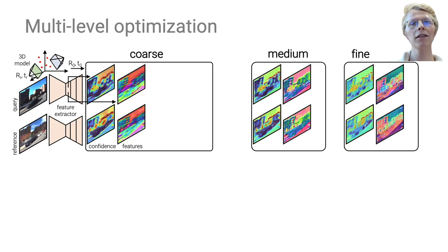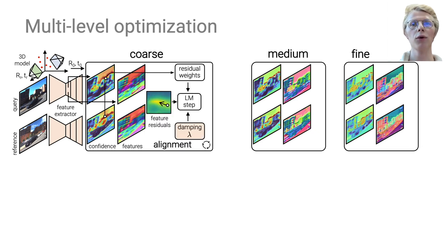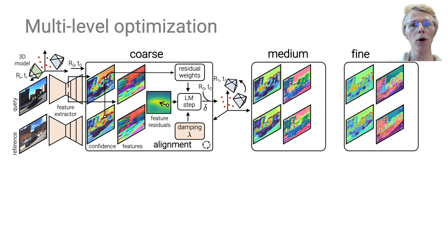For each image, PixLoc first extracts dense features and corresponding confidence maps at multiple levels, from coarse to fine. For each 3D point, the features define a cost that is weighted by the confidence and minimized using gradient-based optimization. PixLoc also encodes a regularization lambda that reflects the prior on the camera motion. We obtain an updated pose, which initializes the optimization at the next level, and so on.